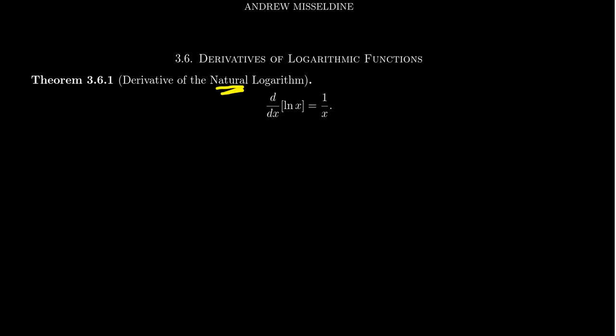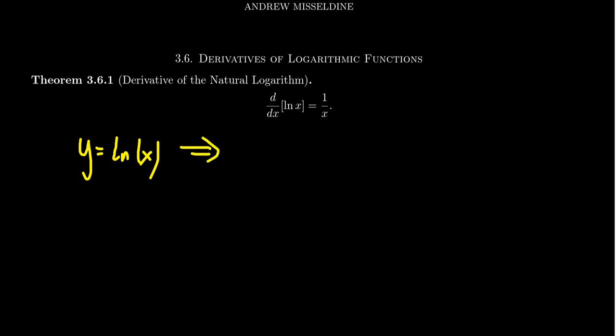It turns out the natural exponential is somewhat exceptional amongst other exponential functions. So we start off with the natural log. What we're going to see is that the derivative of the natural log of x with respect to x is equal to 1 over x. To see that, consider the function y equals the natural log of x. We want to calculate its derivative, but we don't know how to do that yet. So we're going to switch over to its inverse function. If y equals the natural log of x, that means e to the y is equal to x.